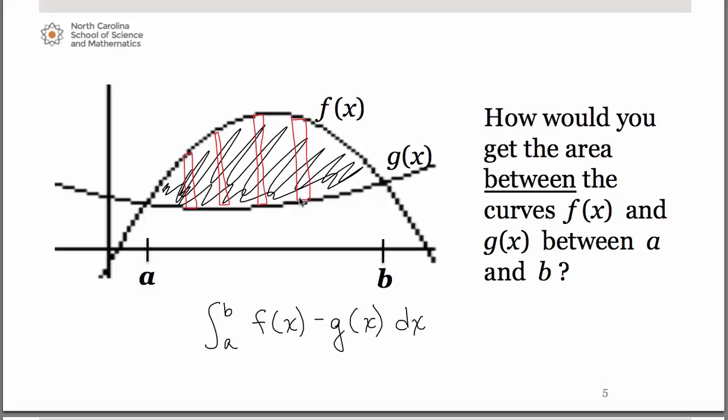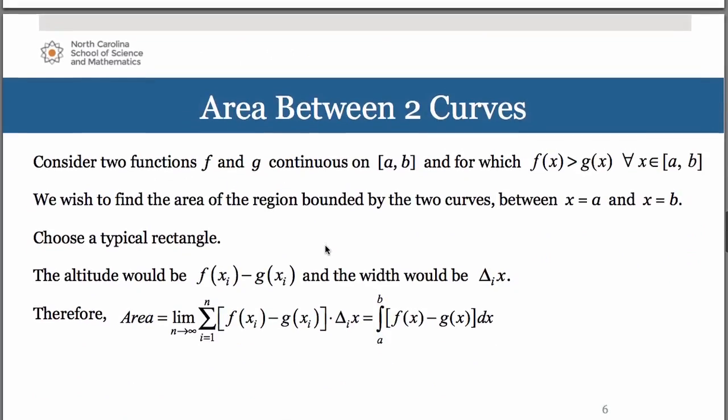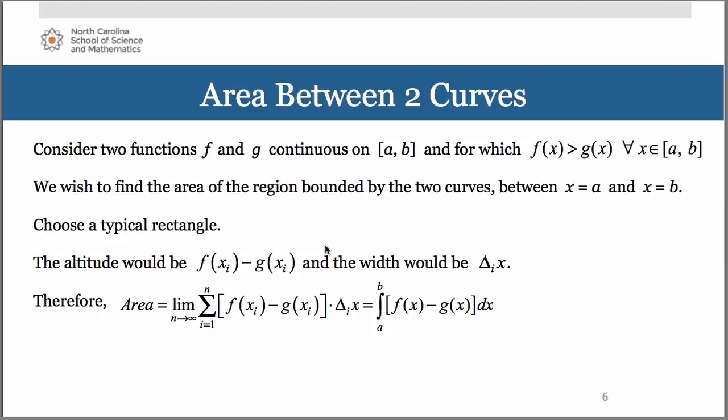The height of each individual rectangle is given by f of x minus g of x. The width is your delta x, just like you had learned with Riemann sums. So each width of the rectangle is delta x. The height is f of x minus g of x. So you could think of it in terms of a summation, just like you learned prior to learning definite integrals.